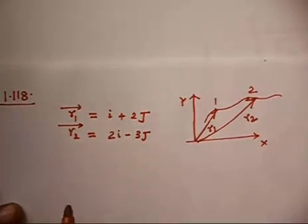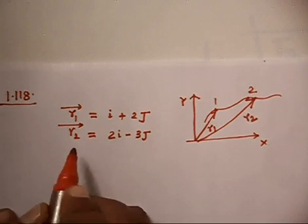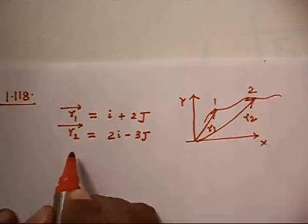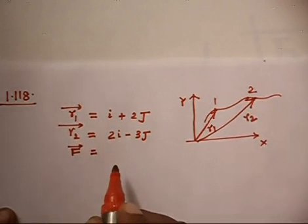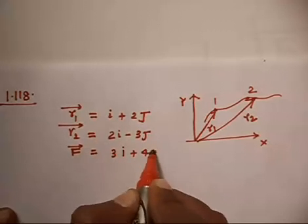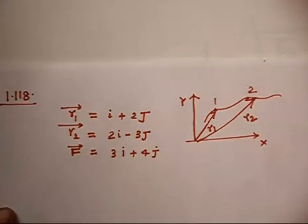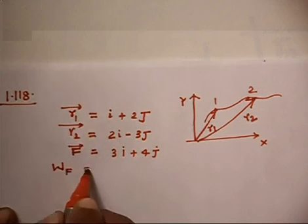And the force is, during that time interval, particle experiences a force. And this force is given. So during this time interval, there is a force that is acting on the particle. That is given by 3i plus 4j. So this is the force that is acting on the particle. Now the question asks, find the work performed by the force.